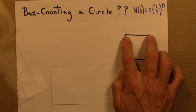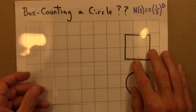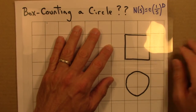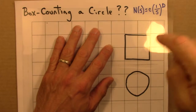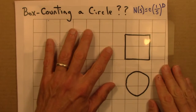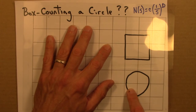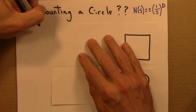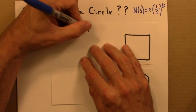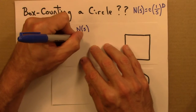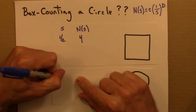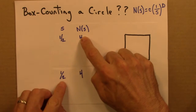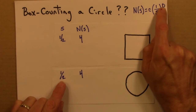Let's say this side is 1, so we have a 1×1 square. The smaller squares then have a side of one-half. For the square there are 4 boxes, and for the circle there are also 4 boxes. So at s = 1/2, N(s) = 4 for both. Since 2² = 4, that's two-dimensional behavior for both — that looks good.